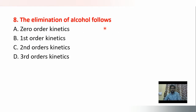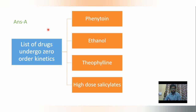Next question: the elimination of alcohol follows — options are zero order kinetics, first order kinetics, second order kinetics, third order kinetics. Alcohol follows zero order kinetics. The drugs that undergo zero order kinetics are phenytoin, ethanol, theophylline, and hydrosalicylate.